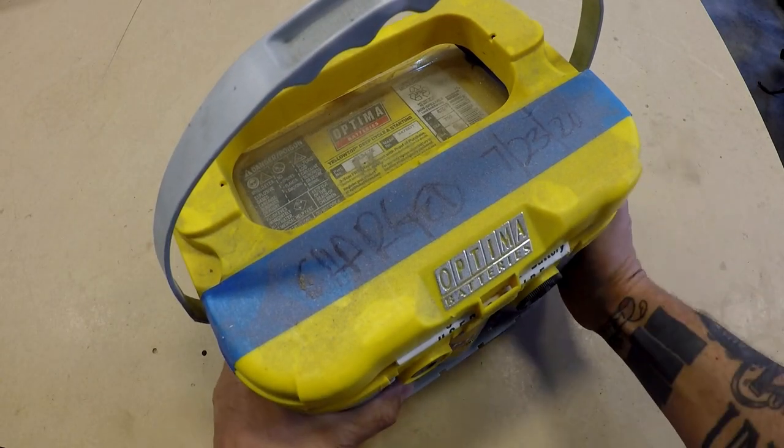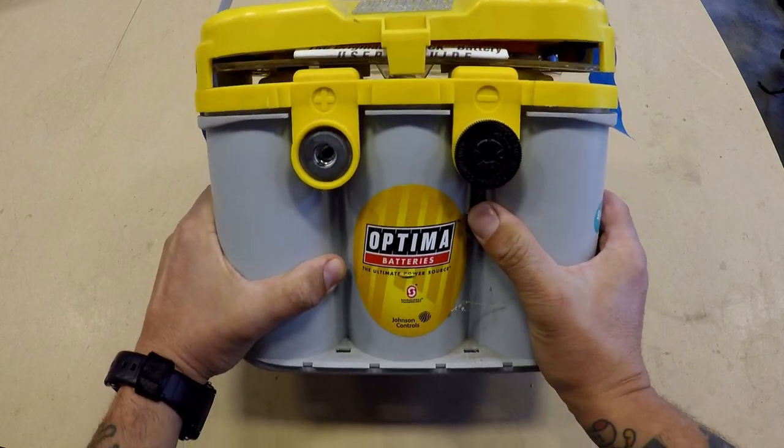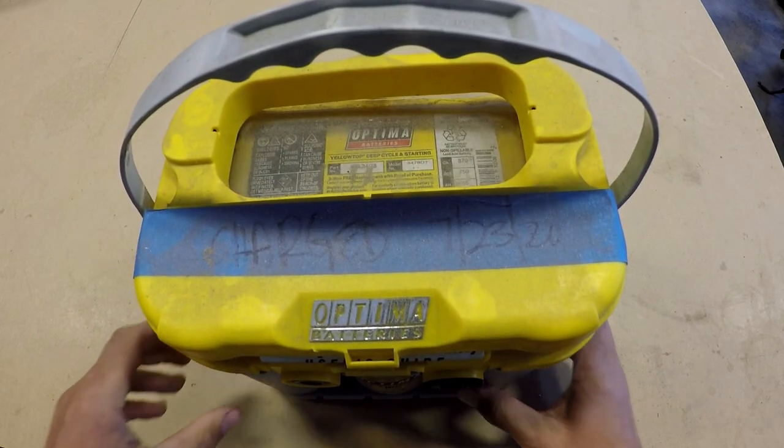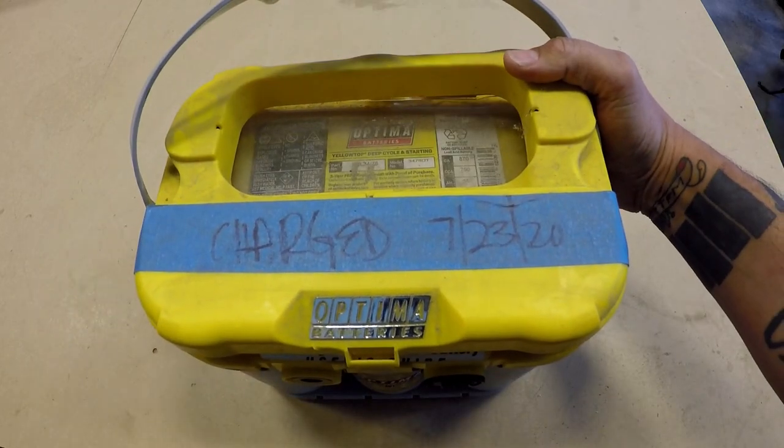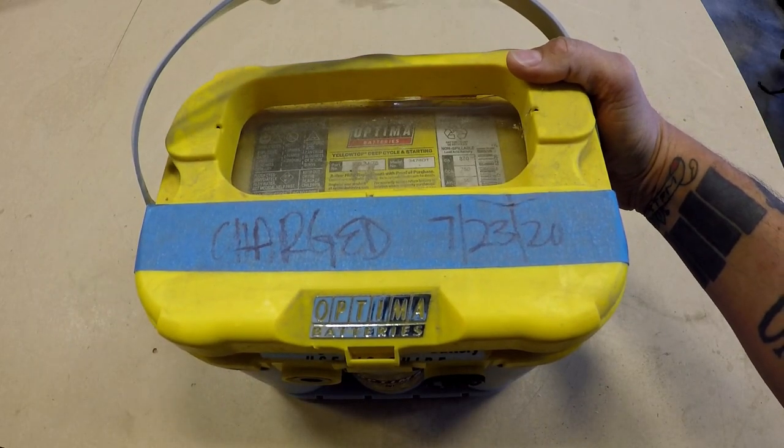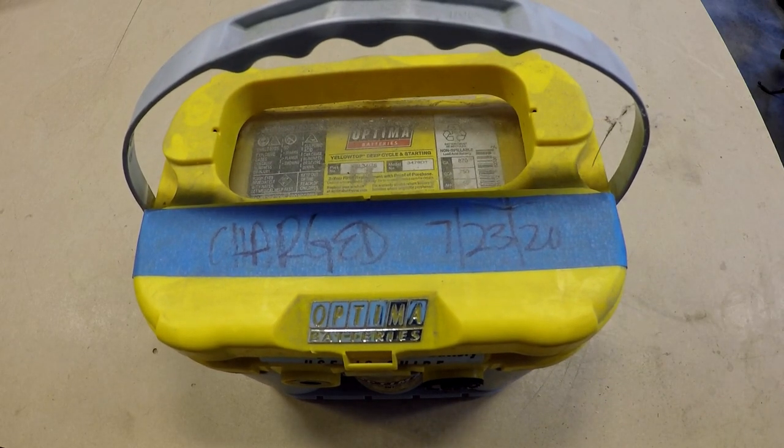We got a car battery. We want to find out if this car battery is any good. This Optima, according to the note on top, full of dust, was charged in July of 2020 and then put on a shelf. Haven't touched it since. How do we know if this is any good?